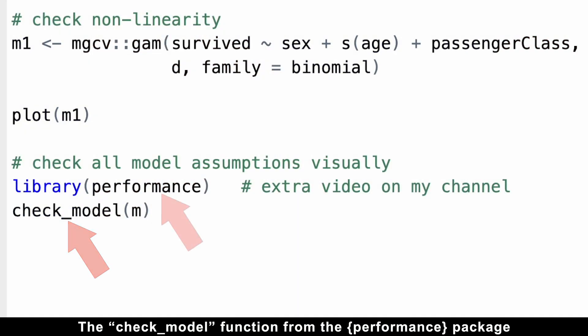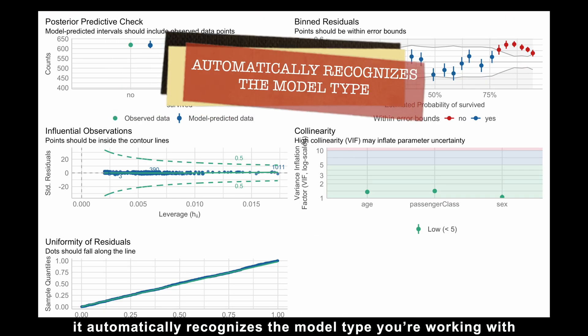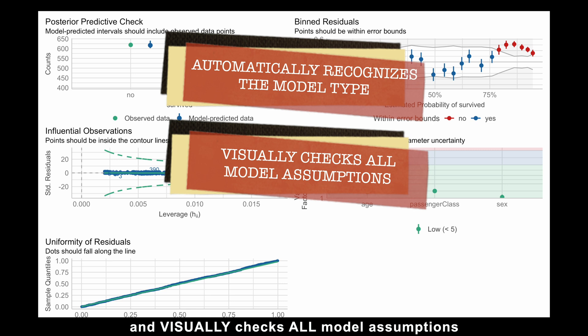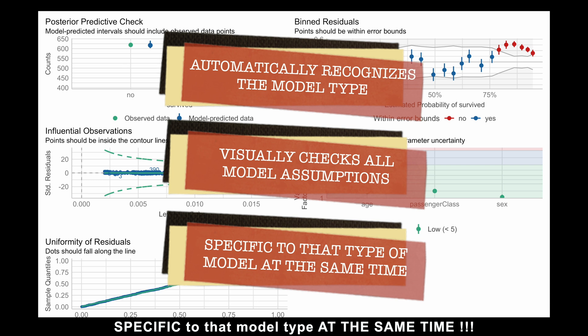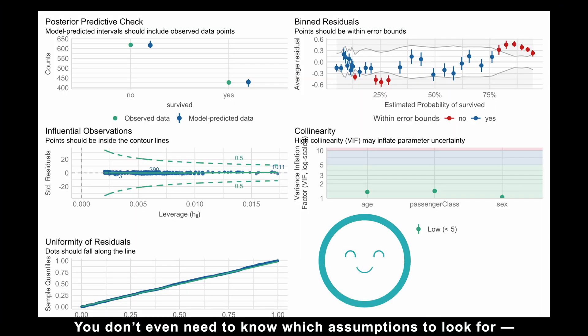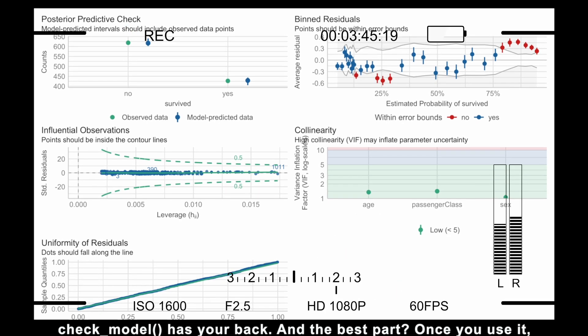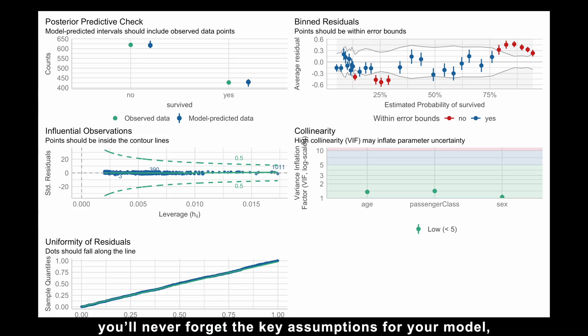The check_model function from the performance package is a total game changer. Once you see what this thing can do, you'll never want to use anything else. And here's why. It automatically recognizes the model type you're working with and visually checks all model assumptions specific to that model type at the same time. You don't even need to know which assumptions to look for. Check_model has your back. And the best part? Once you use it, you'll never forget the key assumptions for your model, making the learning process almost instant.